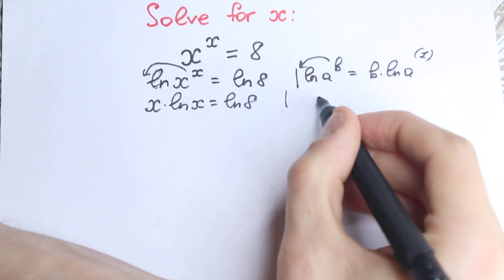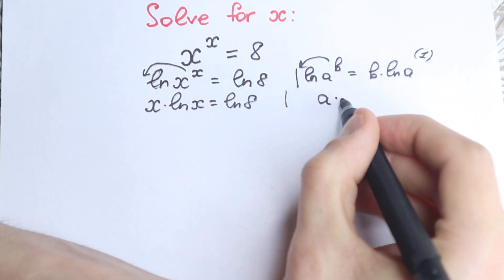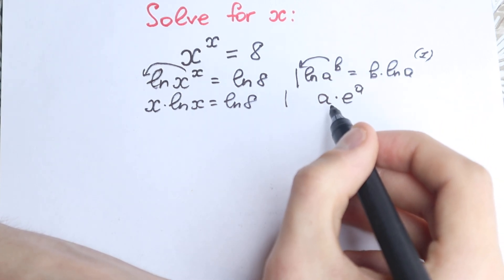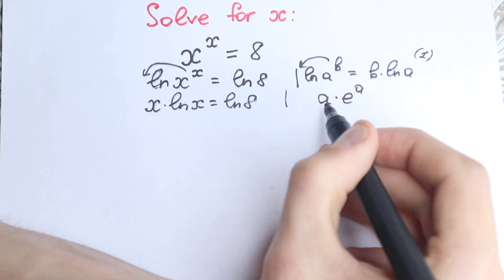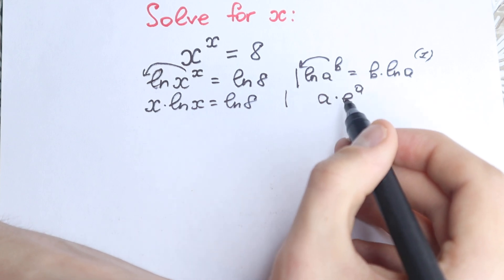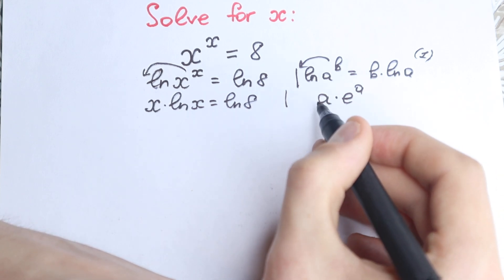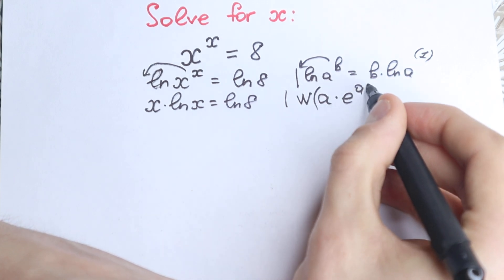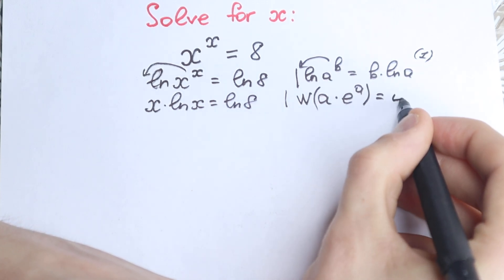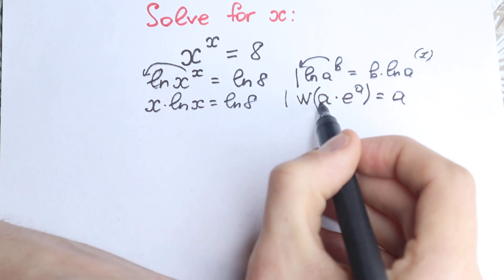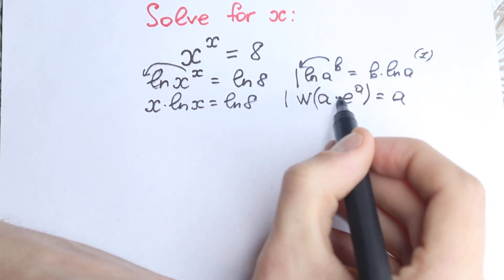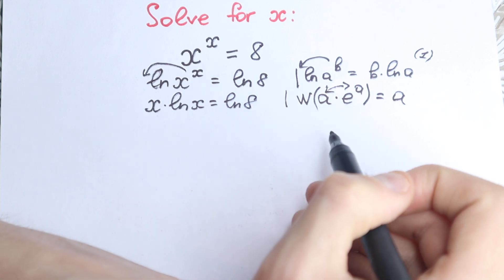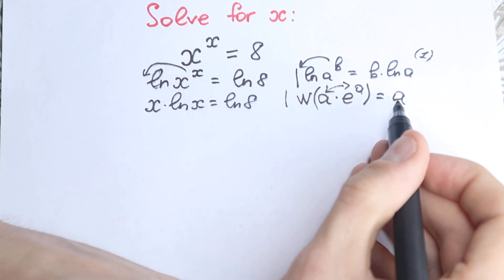First of all, imagine that you have an expression like a times e to the power a — just imagine you have something like that, where a is whatever expression you want. If you apply the Lambert W function to this expression, the result is simply a. So you need to have a and that same a as the power of e, and then applying the Lambert W function gives you back a.